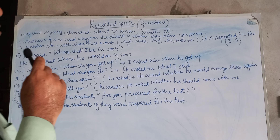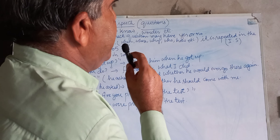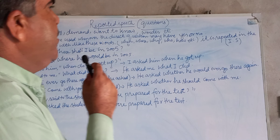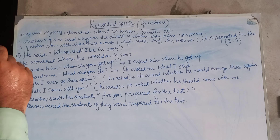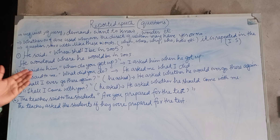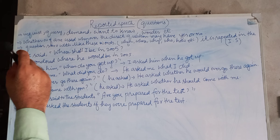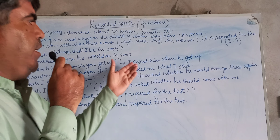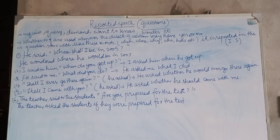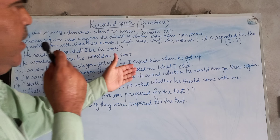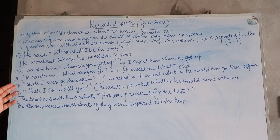If a question starts with WH-words — when, where, why, who, how, etc. — it is repeated in the indirect speech. For example: 'He said, where shall I be in 2005?' becomes 'He wondered where he would be in 2005.' 'I said to him, when do you get up?' becomes 'I asked him when he got up.' 'He said to me, what did you do?' becomes 'He asked me what I did.'